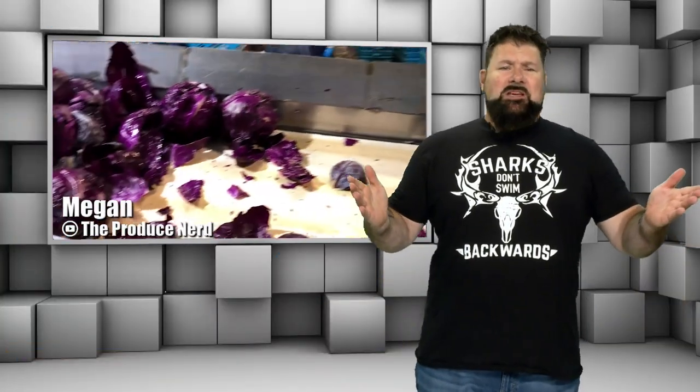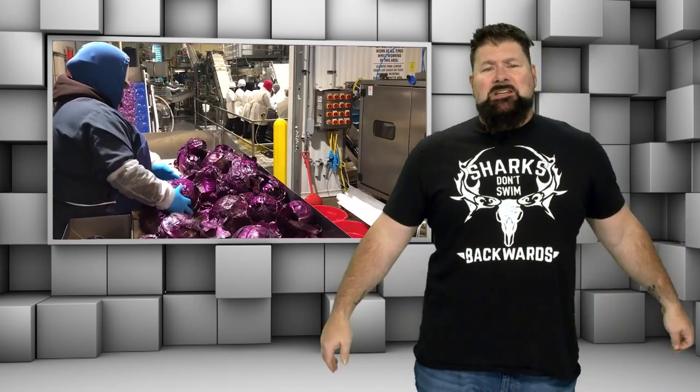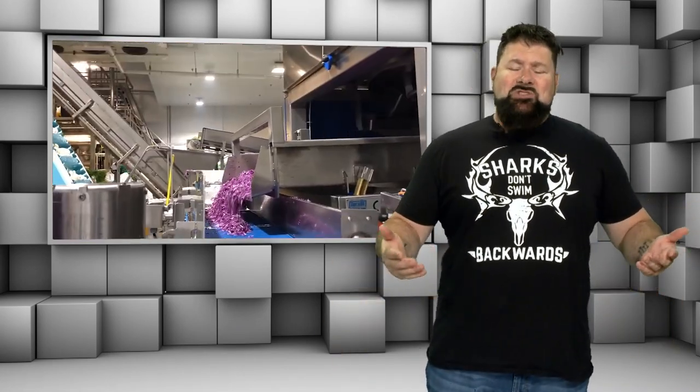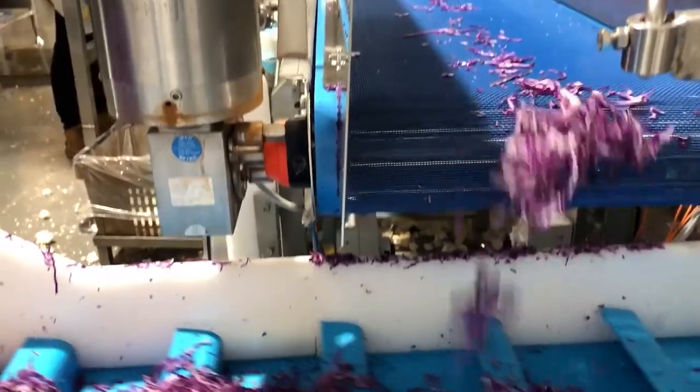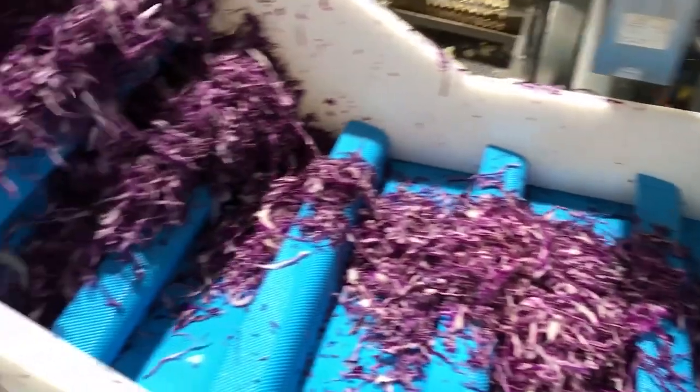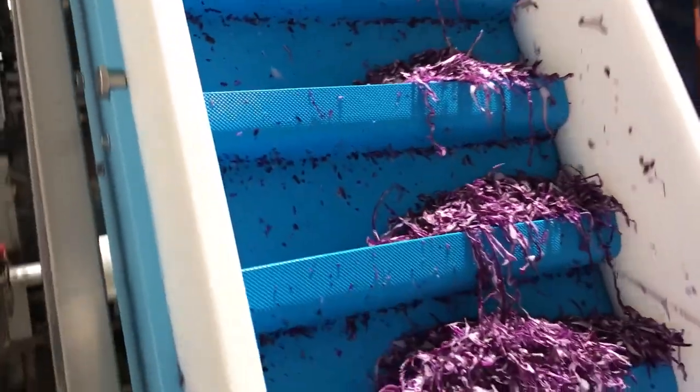Megan, the produce nerd, gives a behind the scenes look at the produce industry, including harvesting, packing, and processing. Her reputation has afforded her unfettered behind the scenes access. This video is about processing cabbage. More specifically, purple cord cabbage. It looks like someone killed Grimace.